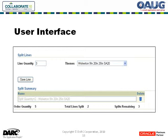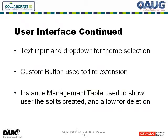We have a text input and a dropdown for the theme selection. The save split button — the custom button — fired an event that called the extension. The incident management table we used is a standard Oracle incident management table; we basically got rid of the add configuration button and slightly customized it.